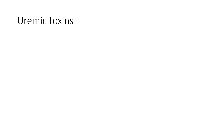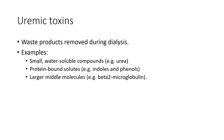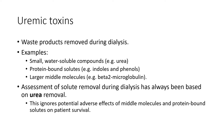There are several types of waste products removed during dialysis, known collectively as uremic toxins. It's a heterogeneous group that includes small water-soluble compounds such as urea, protein-bound solutes such as indoles and phenols, as well as larger middle molecules such as beta-2 microglobulin. The assessment of solute removal during dialysis has always been based solely on urea removal — the removal of small water-soluble compounds. This is a problem, because evidence from experimental and clinical studies points to an adverse effect that middle molecules and protein-bound solutes have on patient survival, yet the current way we assess adequacy ignores this effect.